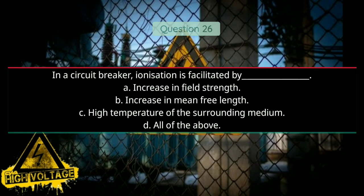Question number twenty-six: In a circuit breaker, ionization is facilitated by — Option A: increase in field strength, Option B: increase in mean free length, Option C: high temperature of the surrounding medium, and Option D: all of the above. Answer will be D, all of the above.